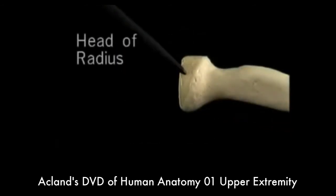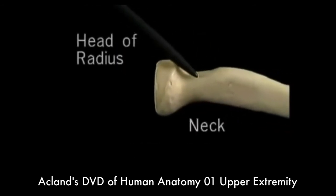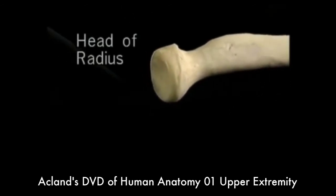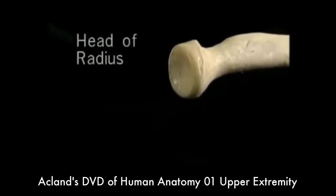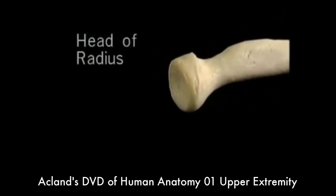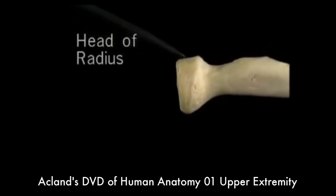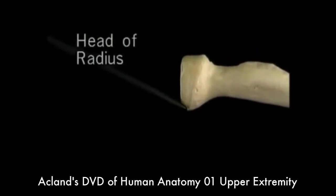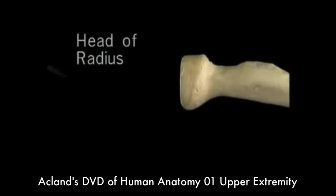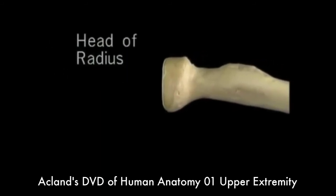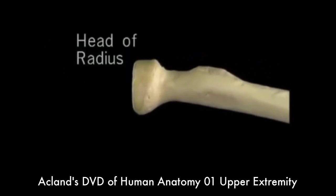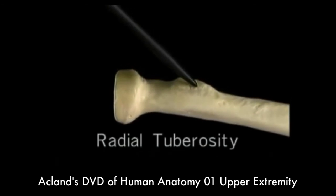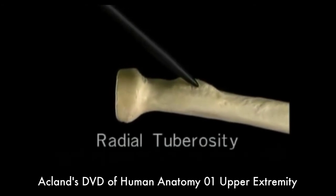This is the head of the radius; this is the neck. The end of the head articulates with the capitulum of the humerus. Its curved side articulates partly with the radial notch of the ulna and partly with the ligament that surrounds it, as we'll see. Just distal to the neck is the radial tuberosity, which is the insertion for the biceps tendon.